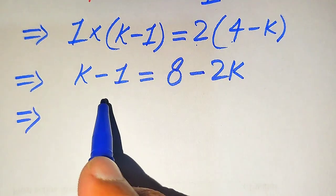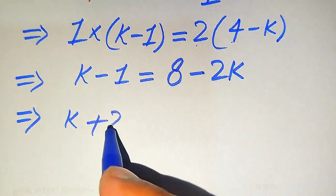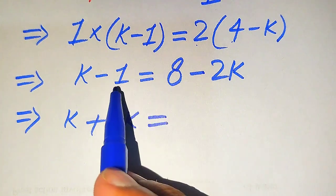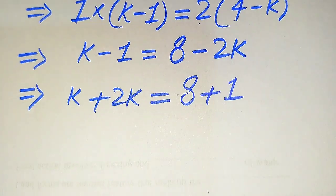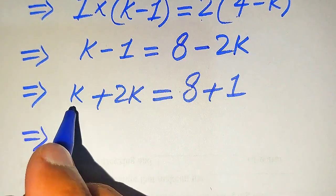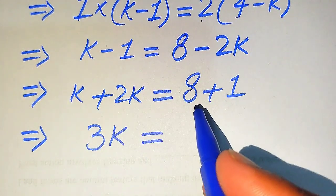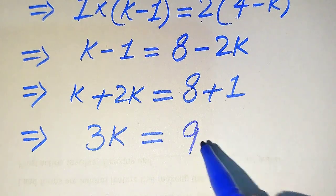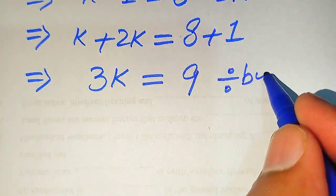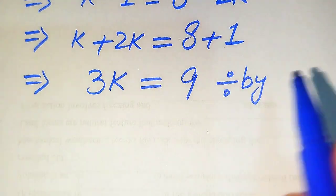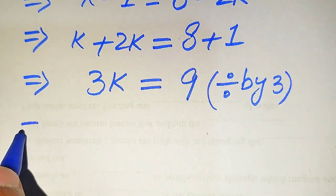We move -2k to the left-hand side, where it becomes +2k. We also move -1 to the right-hand side, where it becomes +1. So we have k + 2k = 8 + 1, which gives us 3k = 9. To find k, we divide both sides by 3 to eliminate the 3 from the left-hand side.